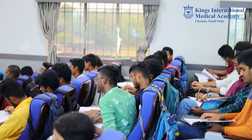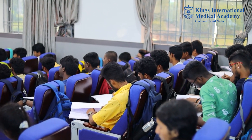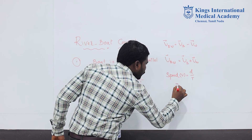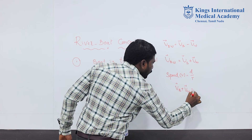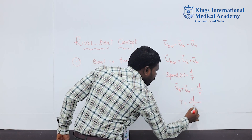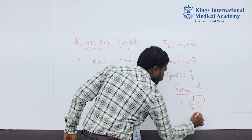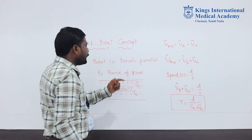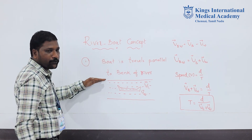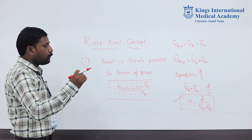According to the speed formula, speed equals distance by time. So speed is VB bar plus VW bar, which equals D by T. From this, we get T equals D divided by (VB bar plus VW bar). This is a very simple formula used to find the time period to cross the river when the boat travels parallel to the bank.